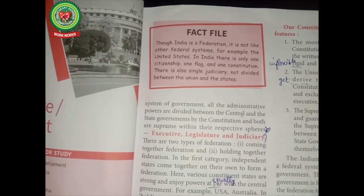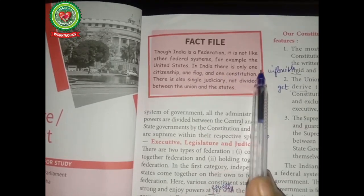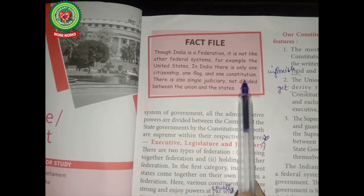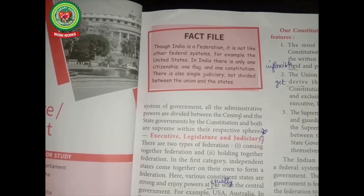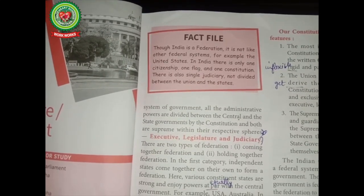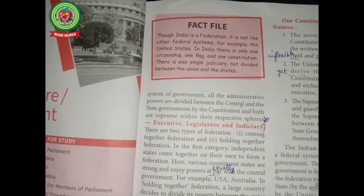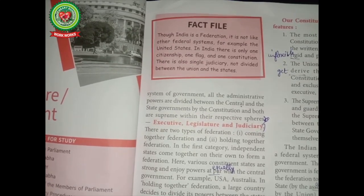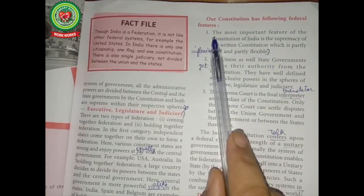Fact file: Though India is a federation, it is not like other federal systems such as the United States. In India there is only one citizenship, one flag, and one constitution. There is also a single judiciary, not divided between the union and states. In the United States there is dual citizenship, and each state has its own constitution and flag.